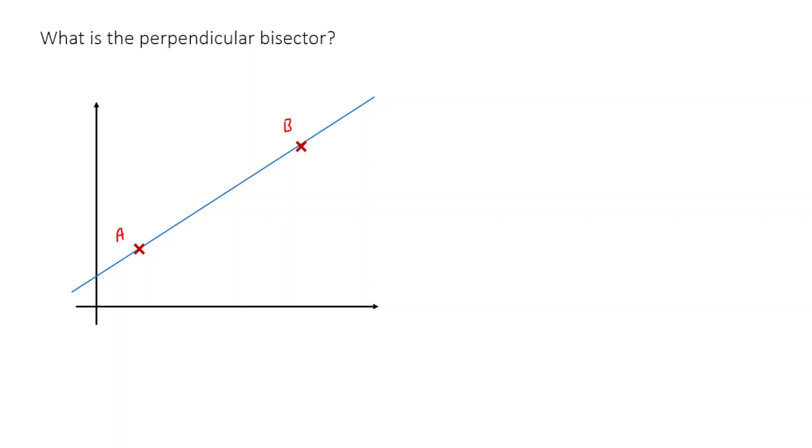And the perpendicular bisector is that line that goes perpendicular to the line AB, like that, so that's perpendicular. And goes through the midpoint of AB. That is, it divides the line AB into two equal halves.